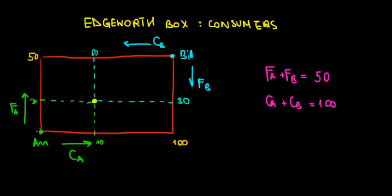Suppose the green dot belongs to Ann. So Ann has food, which is the y-axis, the vertical axis belonging to Ann. And Ann also has clothing, which is the horizontal axis, the x-axis.